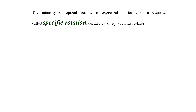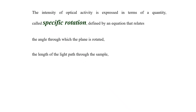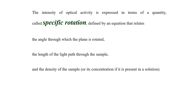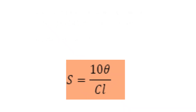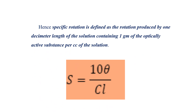The intensity of optical activity is expressed in terms of a quantity called specific rotation. Specific rotation is related to the angle through which the plane is rotated, the length of the light path through the sample, and the concentration or density of the sample. Specific rotation S equals 10 theta divided by C times L. It is defined as the rotation produced by a 1 decimeter length of solution containing 1 gram of optically active substance per CC of solution.